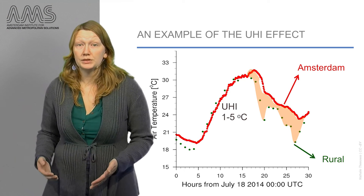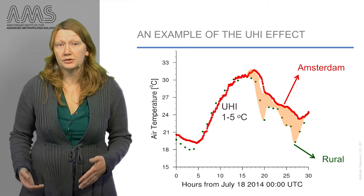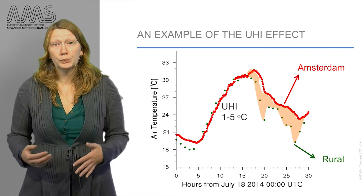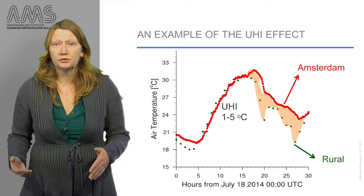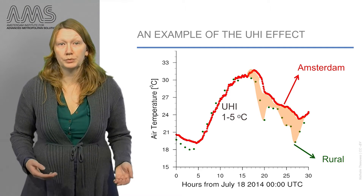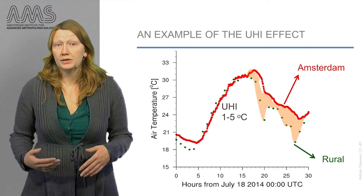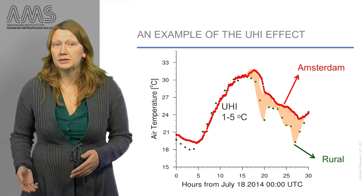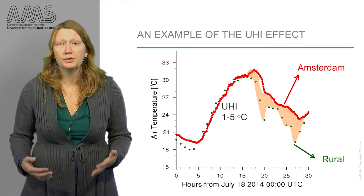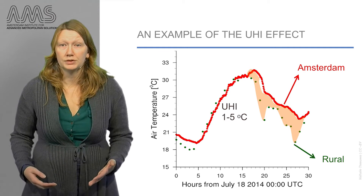And in red you see the air temperature in the center of Amsterdam. During the morning and the start of the afternoon there is very little difference between the two temperatures. However, in the evening and night, the air temperature in Amsterdam stays much warmer than the temperature in the rural surroundings.